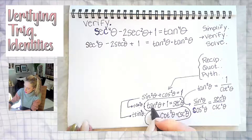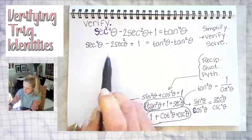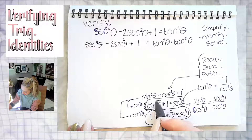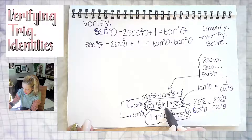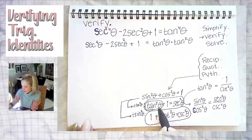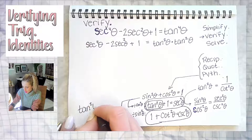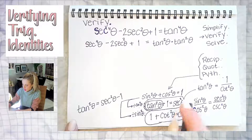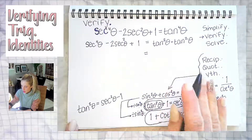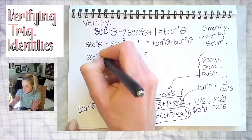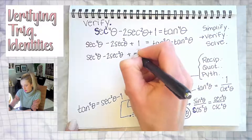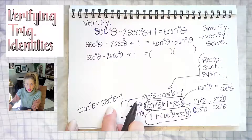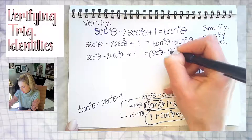I want to replace tan²θ because I see that tan²θ + 1 = sec²θ — that relates the two sides together, and I need to get this to look more like the right side. If I isolate tan²θ in that identity by subtracting 1 from both sides, I get tan²θ = sec²θ − 1. So I'm going to swap each tan²θ out for (sec²θ − 1).